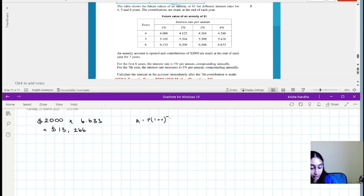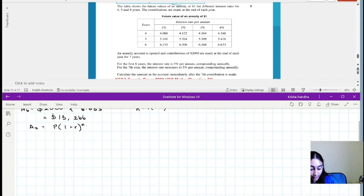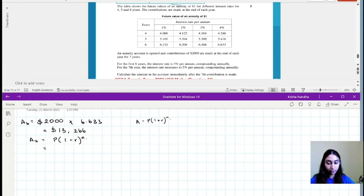So this is the amount until 6. So A7 will be our P times one plus R to the power of N. In this case, P is going to be A6. So whatever we have as our final amount using our table, it'll be $13,226 times 1 plus 5% because we're compounding annually to the power of 1, which will be times 1.05, which equals $13,929.30.